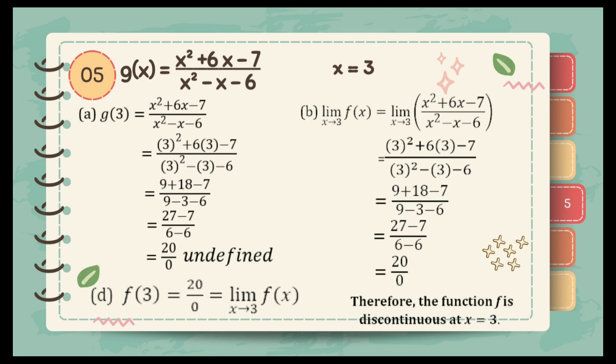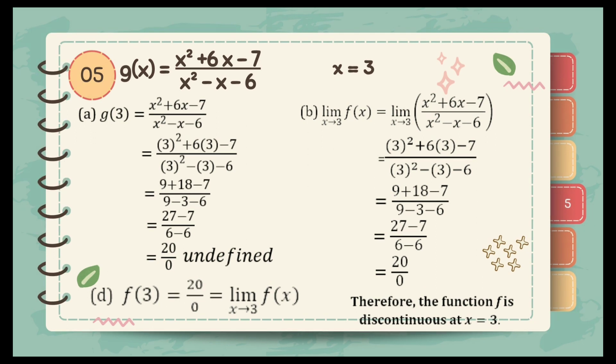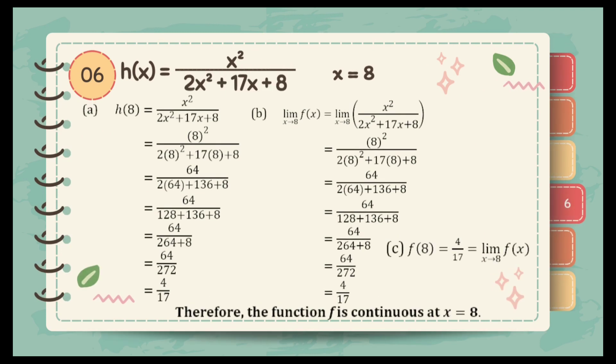For item number 5, g of x is equal to x squared plus 6x minus 7 over x squared minus x minus 6, and the value of x is equal to 3. For letter A, substitute 3: we get 9 plus 18 minus 7 over 9 minus 3 minus 6, which equals 20 over 0. It is undefined since the denominator is 0. And for finding the limit, since there is no cancellation if we factor it out, we can just do the direct substitution and get 20 over 0. Since the first condition is undefined, therefore the function is discontinuous at x is equal to 3.